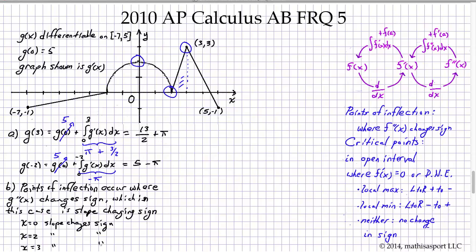Part c: We're given a new function based on the earlier function h of x. It's defined to be g of x minus 1 half x squared. And now they ask us about finding critical points. So, critical points occur not at the end points but in the open interval wherever the function in question equals 0 or doesn't exist. So, we'll reiterate that.